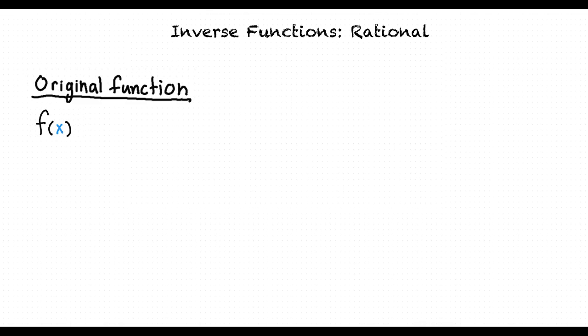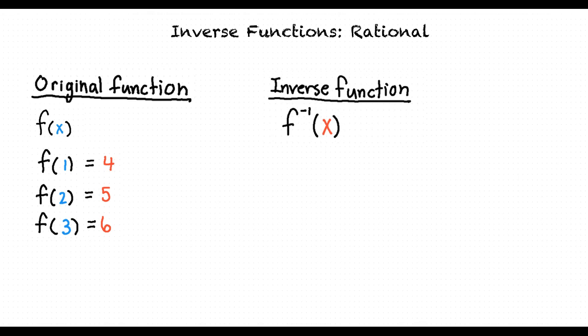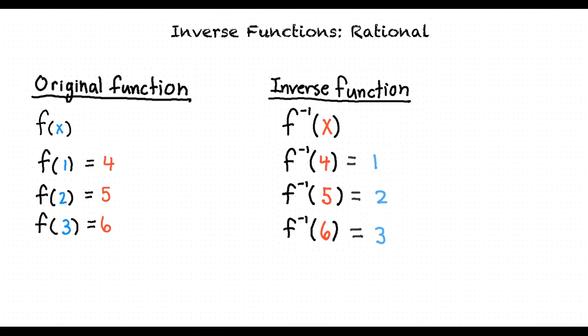Let's say that we have a function f of x. And let's say that hypothetically, if we were to substitute the x values of 1, 2, and 3 into the function for x, we will get out the values of 4, 5, and 6 respectively. The inverse function for f of x would be such that if we were to insert the x values of 4, 5, and 6 into it, it would output the values of 1, 2, and 3 respectively.